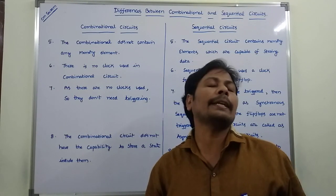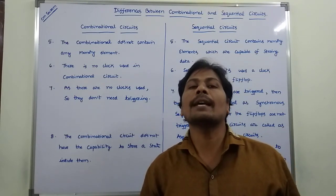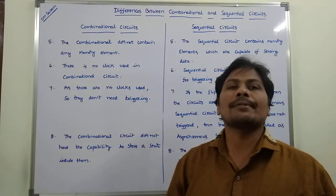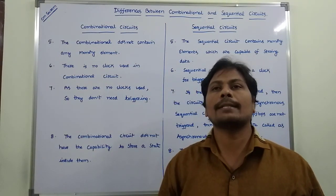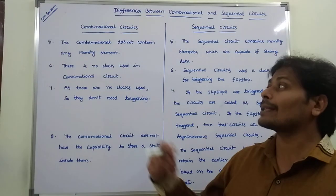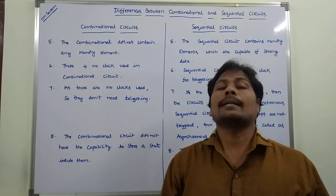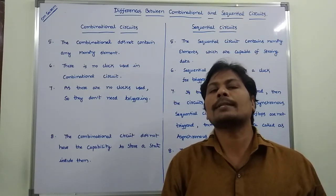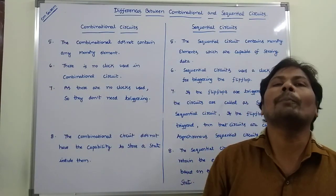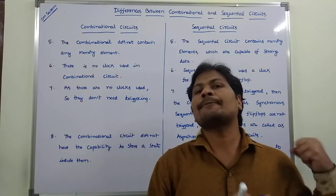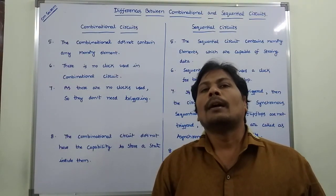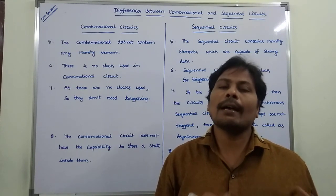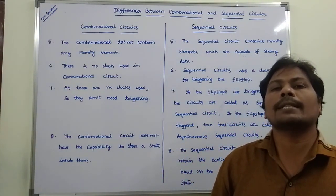These are the differences between combinational logic circuits and sequential logic circuits. Examples of combinational logic circuits include adders, subtractors, decoders, multiplexers, encoders, and demultiplexers. Examples of sequential circuits are counters, shift registers, flip-flops, and latches.